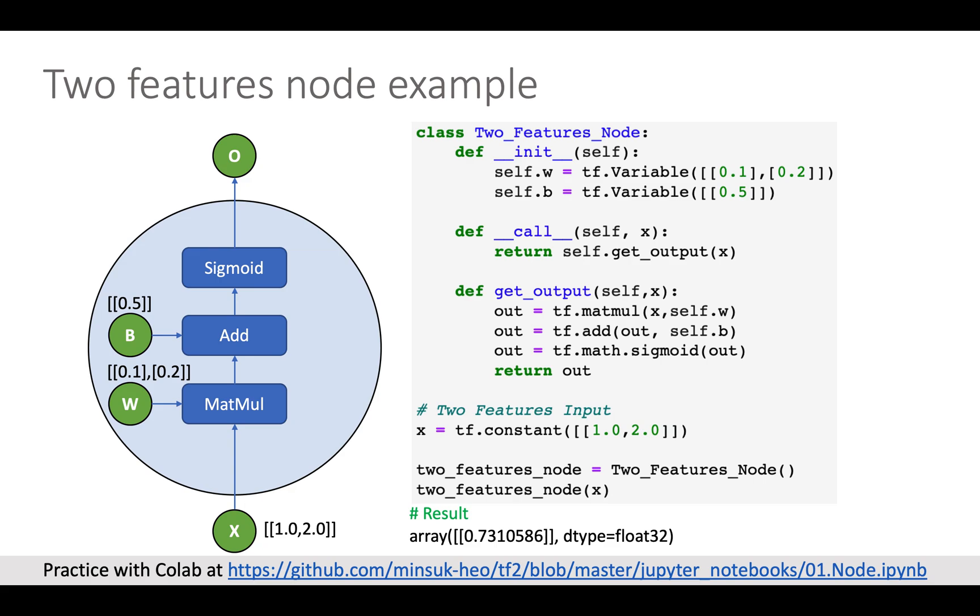And this is a two feature single node example. Everything is the same but the weight and input has now two numbers. You can increase feature count as much as you need with TensorFlow's powerful API.